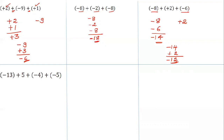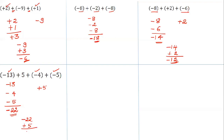Now: minus 13, plus 5, minus 4, and minus 5 — add these integers. Group the integers having the same sign: minus 13, minus 4, minus 5. They have the same sign, so add: 22, giving minus 22. Only one number has a positive sign: plus 5. Now add minus 22 and plus 5 — the numbers have different signs, so subtract: that is 17. Answer: minus 17, because of the bigger number's sign.